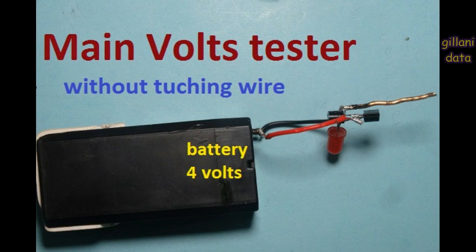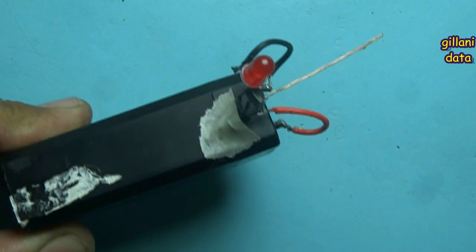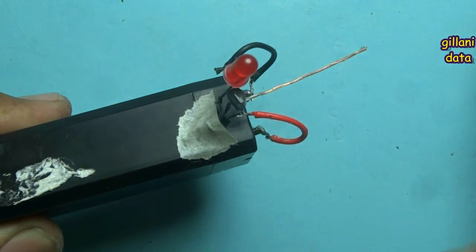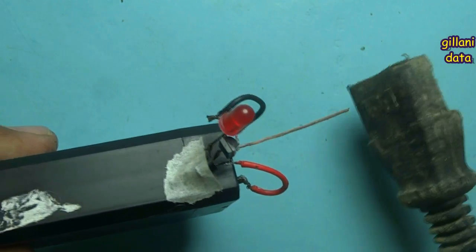In this video, I have shown a tester for main 220V without touching anywhere. It is a very safe way to test main current. Look, as the tester knob comes close to the main wire, the LED glows.